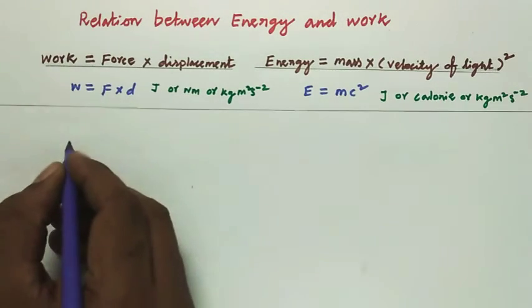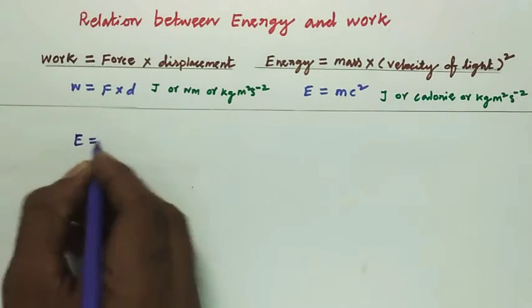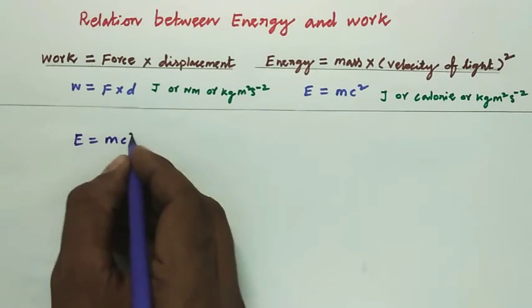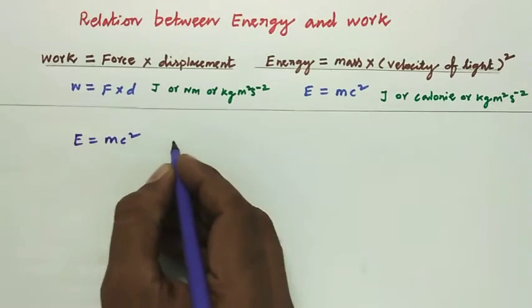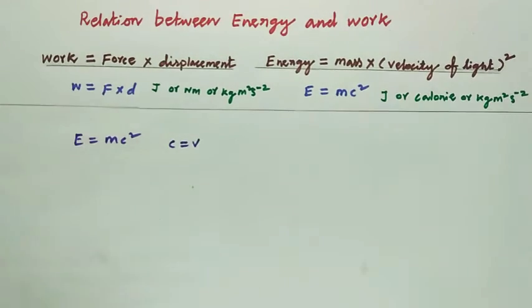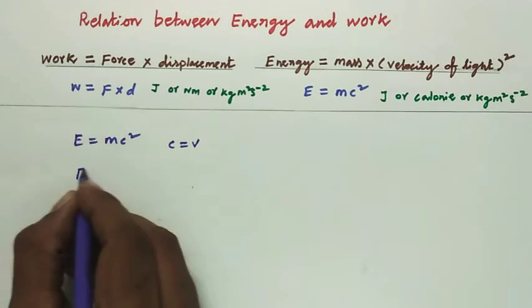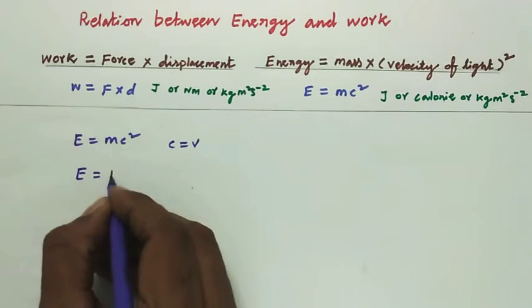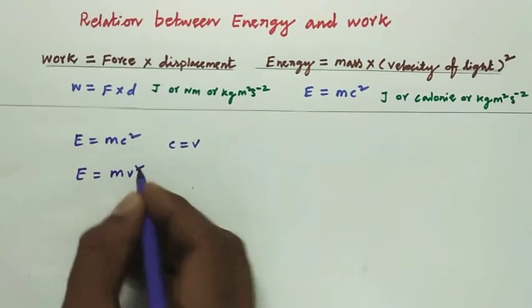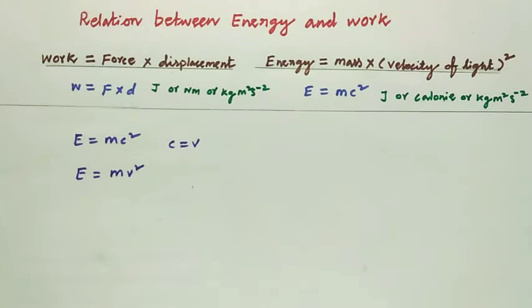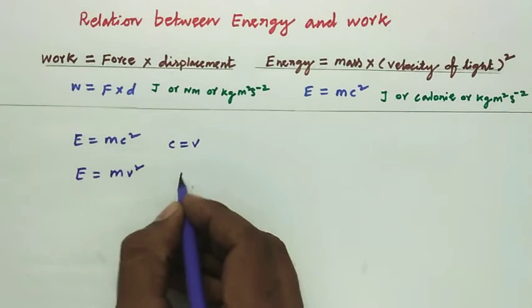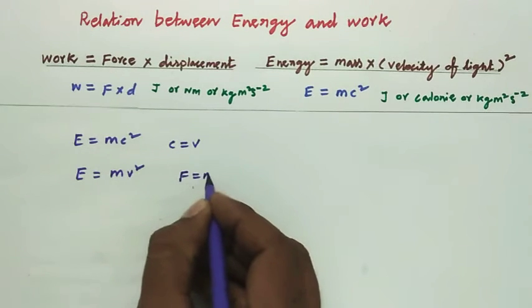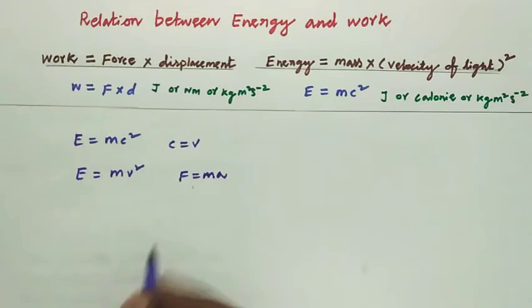E is equal to mc square. c is the velocity of the light, so c we can tell as v. So E is equal to mv square. We know the formula for Newton's second law of motion: F is equal to ma.